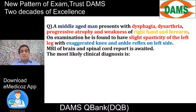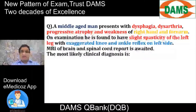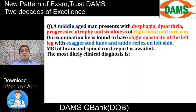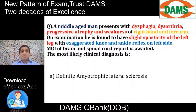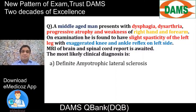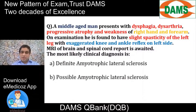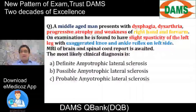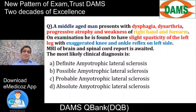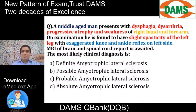One of the most common motor neuron diseases is amyotrophic lateral sclerosis. The question asks: the most likely clinical diagnosis is definite ALS, possible ALS, probable ALS, or absolute ALS? I know it is ALS — but is it definite, possible, or probable?